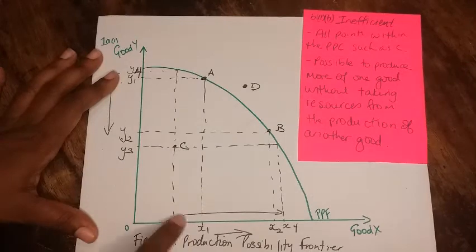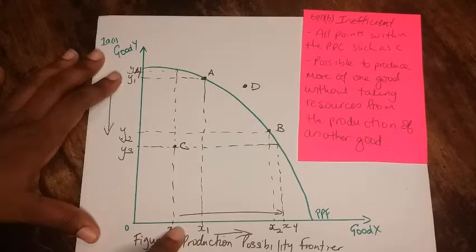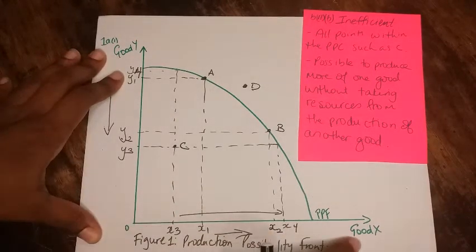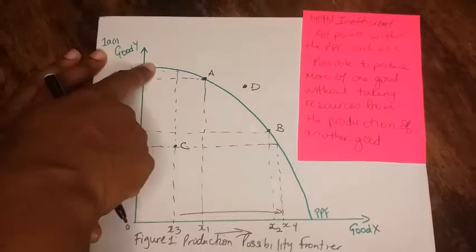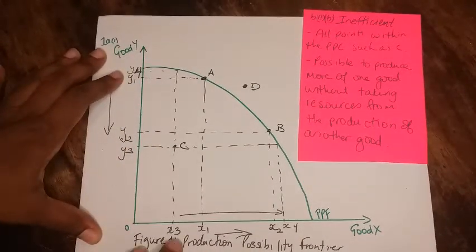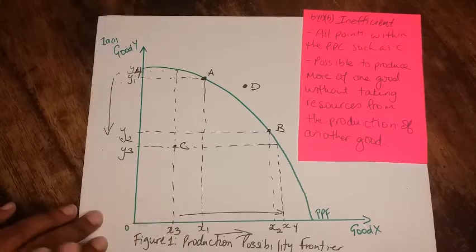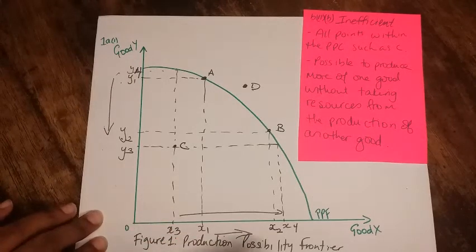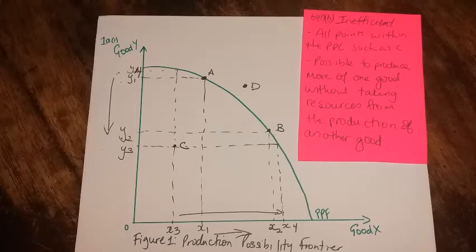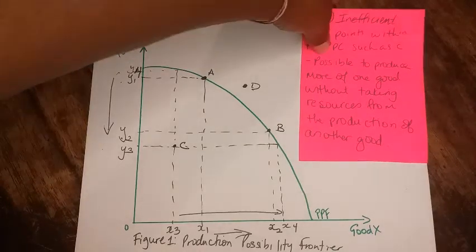So you can use either way - either you say you want to get more of good X or more of good Y - but you just need to show that it's possible to get more of one type of the good or one good without having to give up resources from another good or give up more of another good.